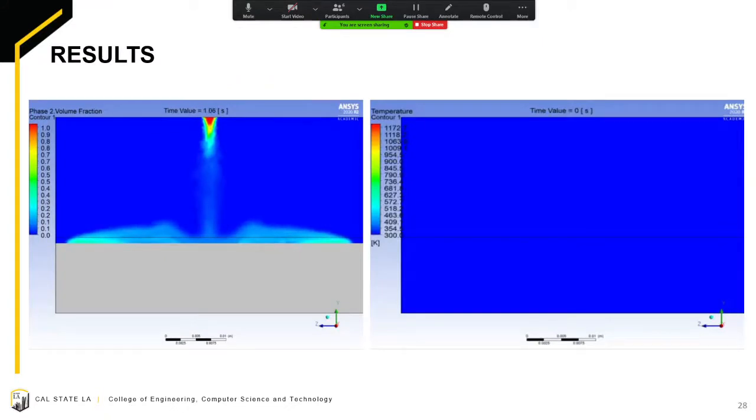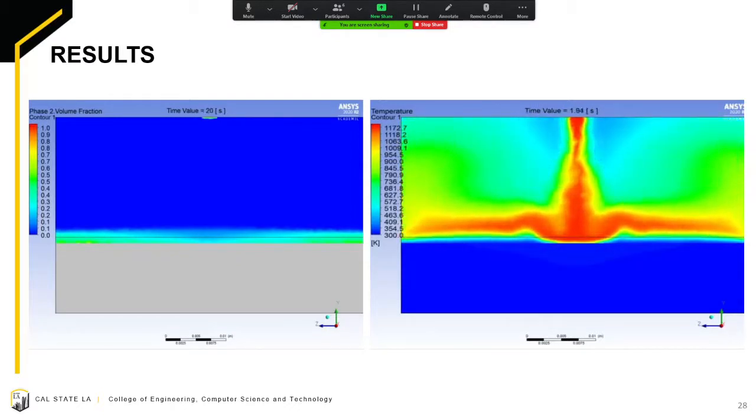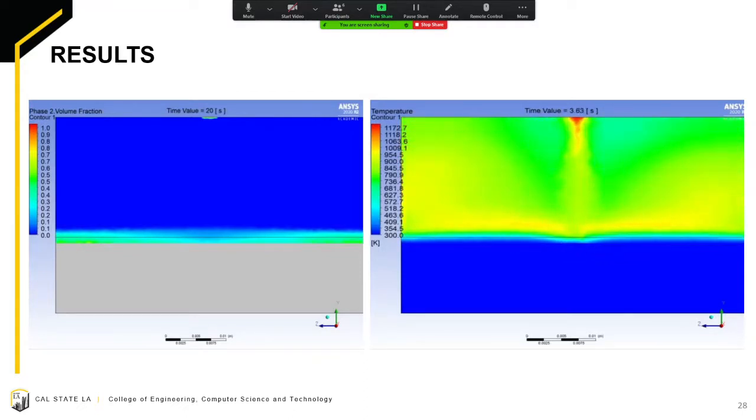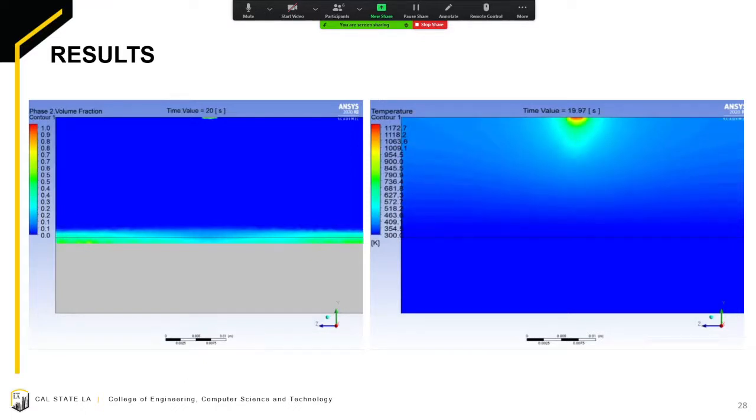The video on the left shows the flow of the material. As seen on the video, splashing occurred where the molten BMG made contact with the surface of the copper mold. This suggests that the speed of the molten BMG needs to be reduced. The video on the right shows the temperature contour of the fluids within the domain. The BMG did not cool down as quickly as the transient model did, but it still cooled down at a higher rate than the critical cooling rate.